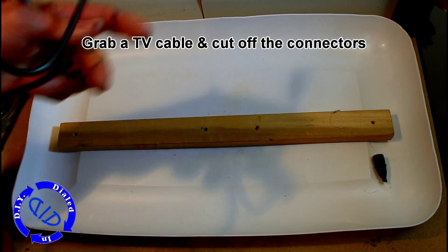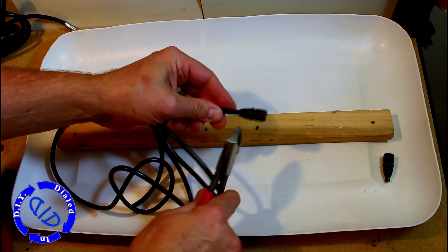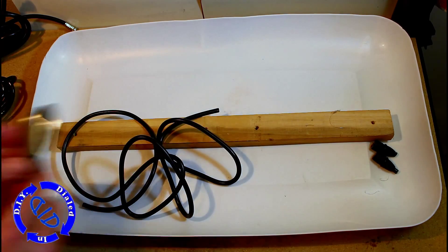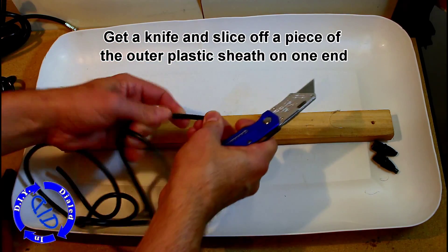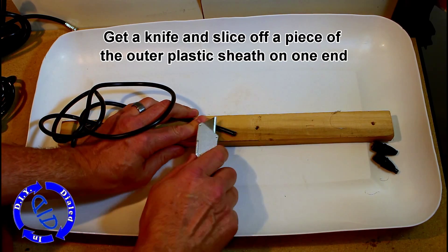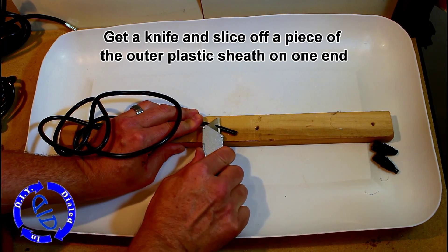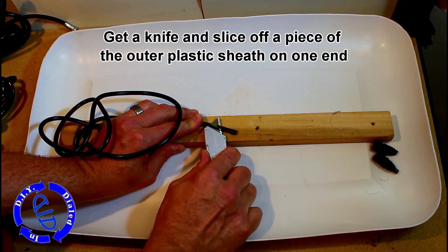First, we're going to grab the TV cable and cut off the connectors on each end. I'm actually going to walk you through two types of cables and show you what each looks like on the inside. I'm going to start by getting a knife and slicing off a piece of the outer plastic sheath on one end. That way we have something to hold onto as we begin to work through it.